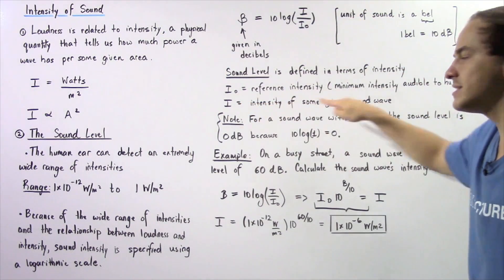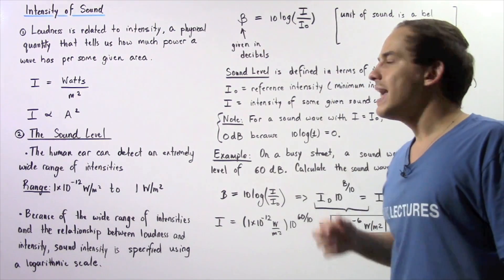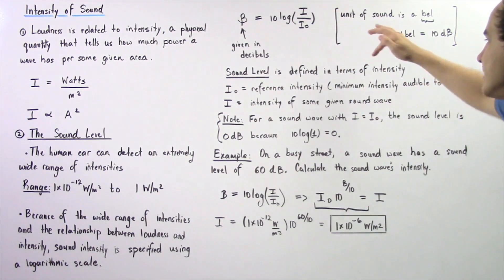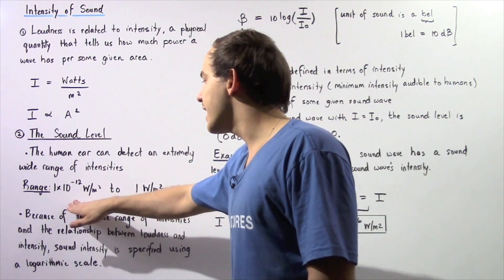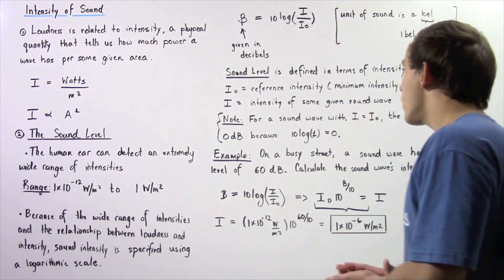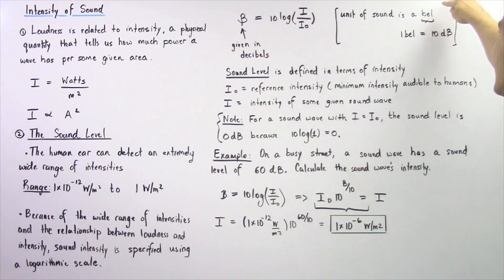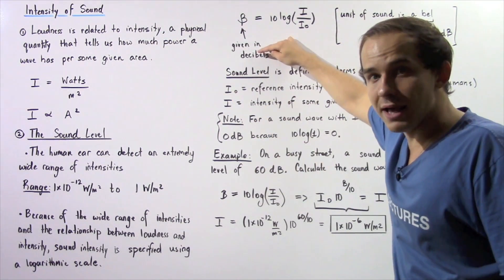I is simply the intensity of some sound wave that we're examining, and I₀ is simply a reference intensity. Usually I₀ is the minimum intensity audible to humans and it's given by 1 × 10^-12 watts per meter squared. The unit of sound is given by a bell, and one bell is equal to 10 decibels. This sound level B is given in decibels.